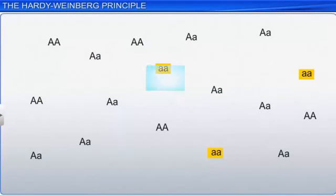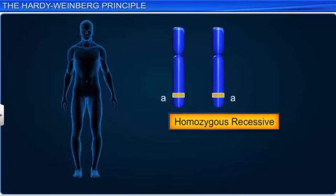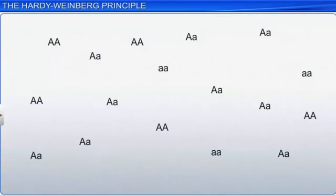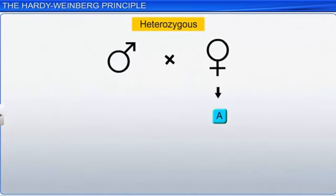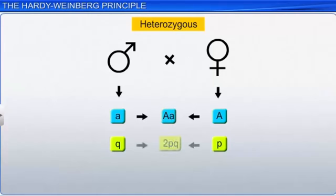Similarly, the frequency of a homozygous recessive individual, or small a small a, is Q square. Since there are two ways of forming heterozygotes, or capital A small a — that is, capital A allele from the mother and small a allele from the father, and vice versa — therefore, the frequency of a heterozygous individual, or capital A small a, is 2pq.